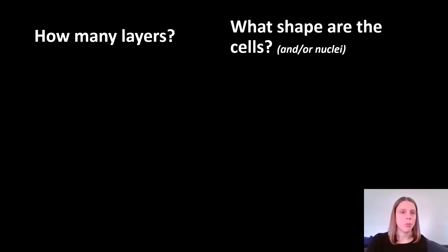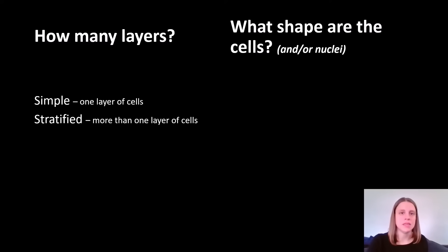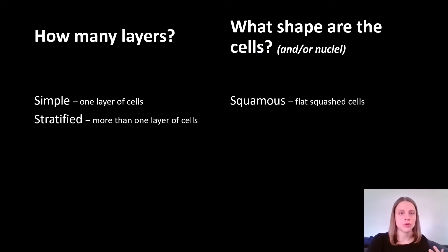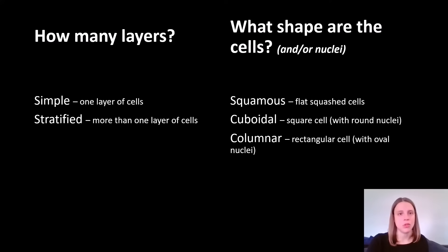When you're seeing one layer of cells, that is a simple epithelium. Multiple layers of cells would be a stratified epithelium. Our three possible shapes are squamous, which are flat; cuboidal, which are squares; and columnar, which are columns.